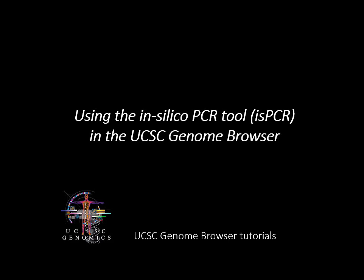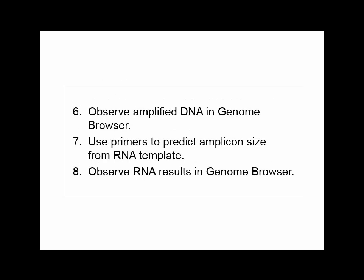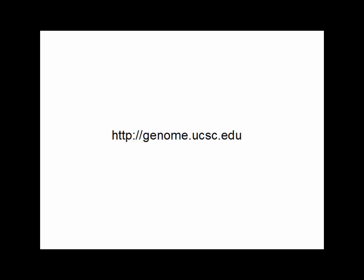In this tutorial, we will explore the UCSC Genome Browser's in-silico PCR tool. This tool allows you to predict the sequence and size of products that would result from a polymerase chain reaction experiment using primers you may wish to use.